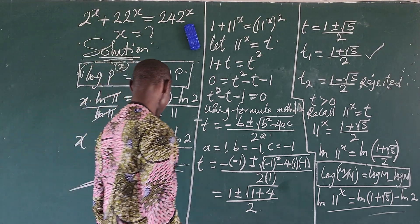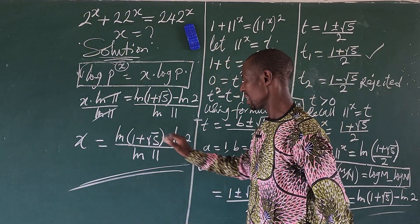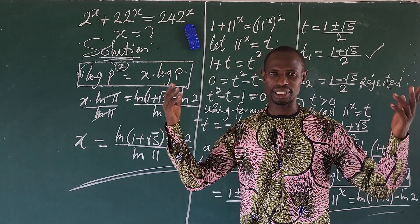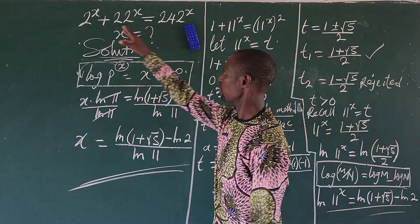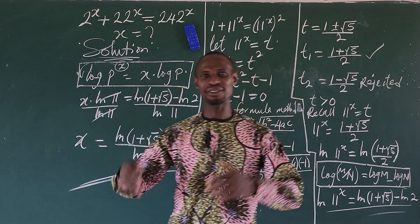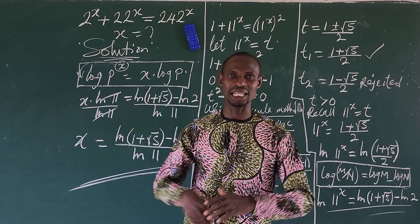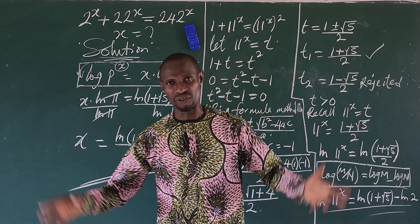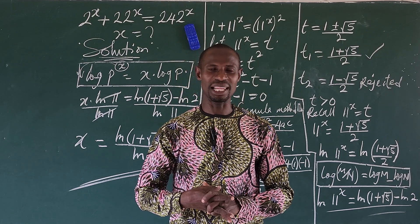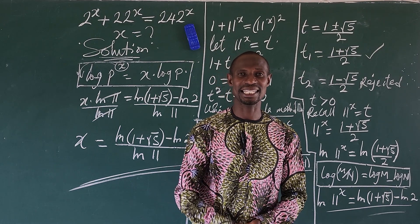This is the final value of x. To get the numerical value, find √5, add 1, take ln of the result, subtract ln(2), then divide by ln(11). Substituting that value back into the original equation will verify the answer. That brings us to the end of this math tutorial. If you learned something, give it a thumbs up, drop questions in the comments, and we'll see you in the next class.